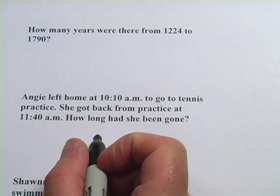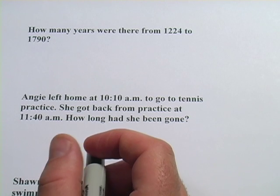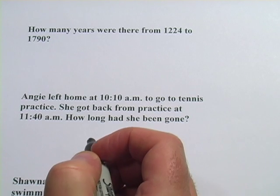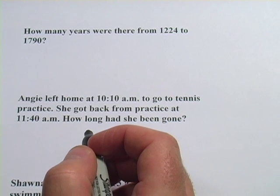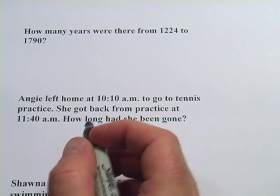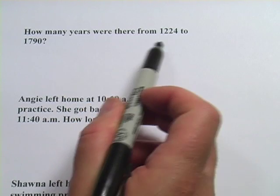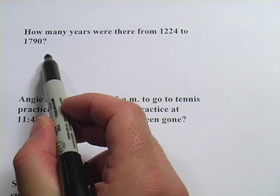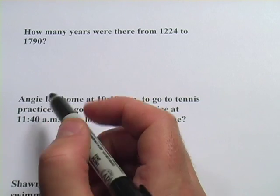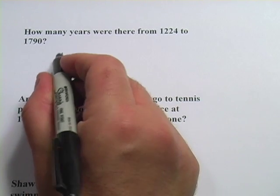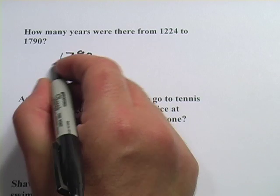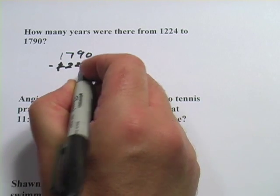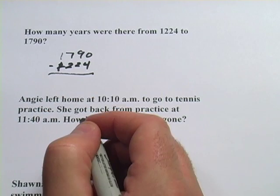Here we have some word problems that are all about the passage of time — how much time is going by, whether that's years or hours or some other units. The first one says: how many years were there from 1224 to 1790? What we're going to do is subtract 1790 minus 1224, and that should give us the right answer of how many years were in between.